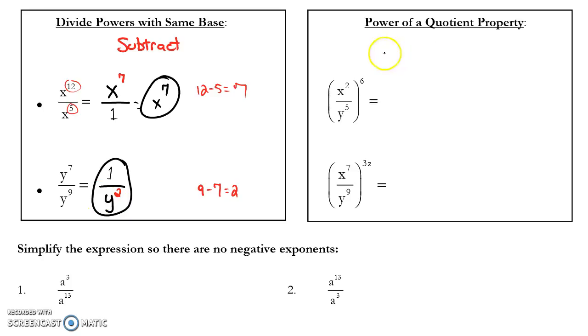The second property is the power of a quotient. Again, it's very similar to my product to a power property, where I have to apply that exponent to everything in the parentheses. Same thing holds true here. Except now, certain things in here, like my x to the 2nd, are in a fraction, and y to the 5th. But this exponent of 6 applies to all of it, because it's applying to the parentheses.